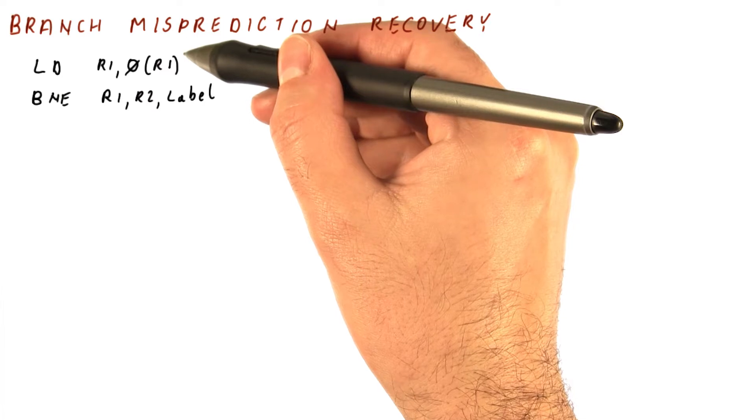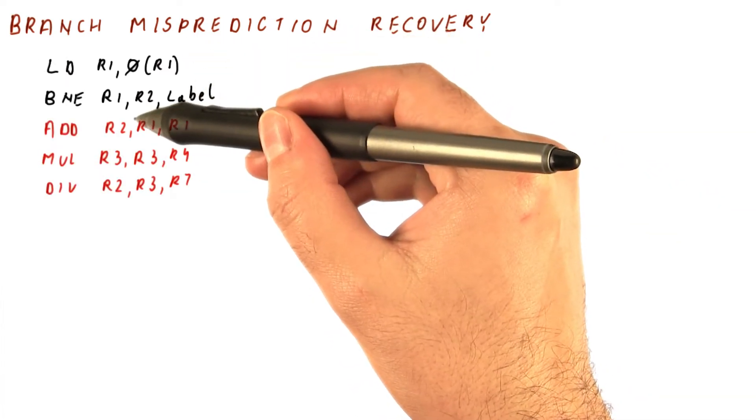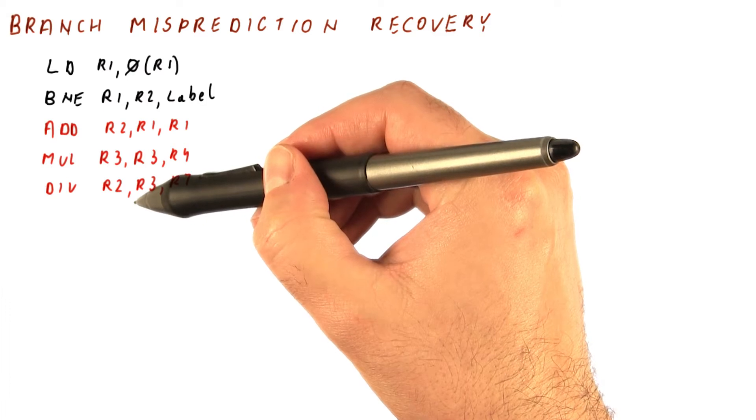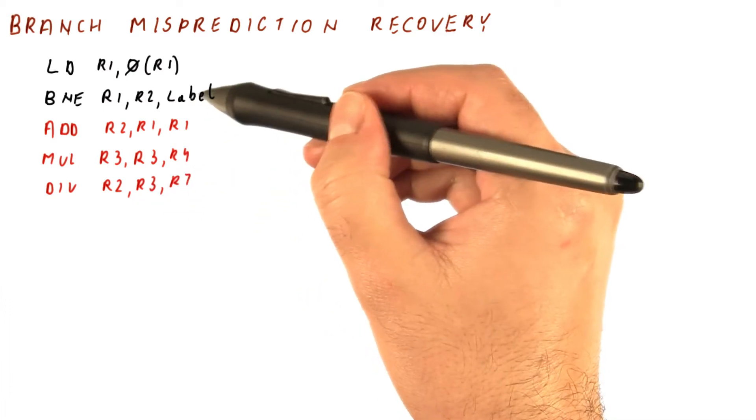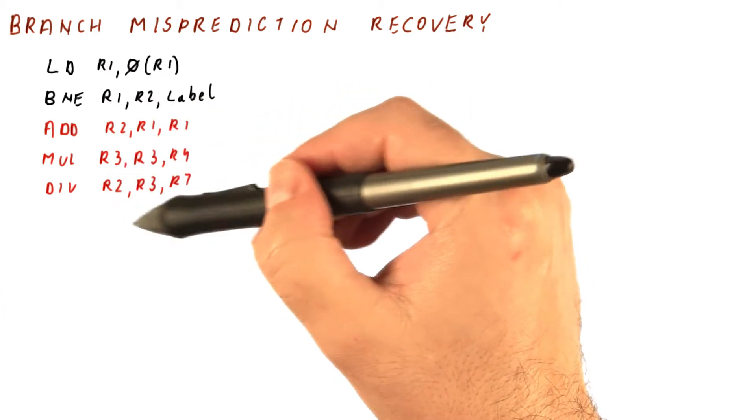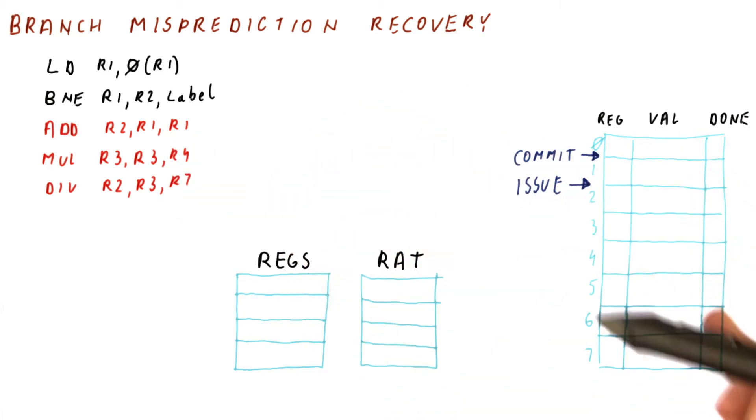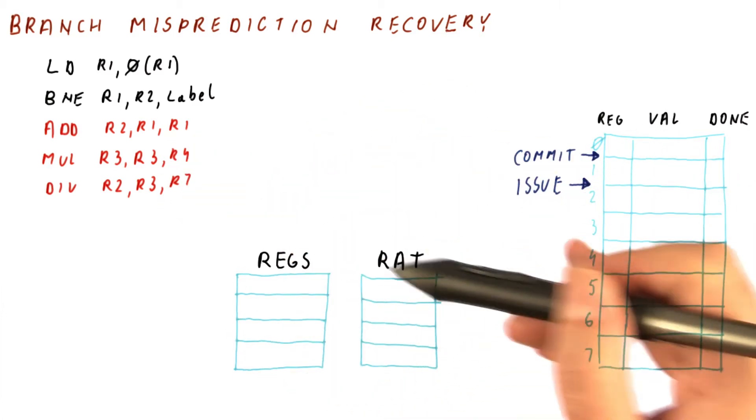Suppose we have a program that reaches a branch, and suppose that our prediction was that the program will continue here and fetch these three instructions, although in fact the program branches. So these three instructions will be executed in a branch misprediction. Let's say what happens in this program in our ROB and the registers.